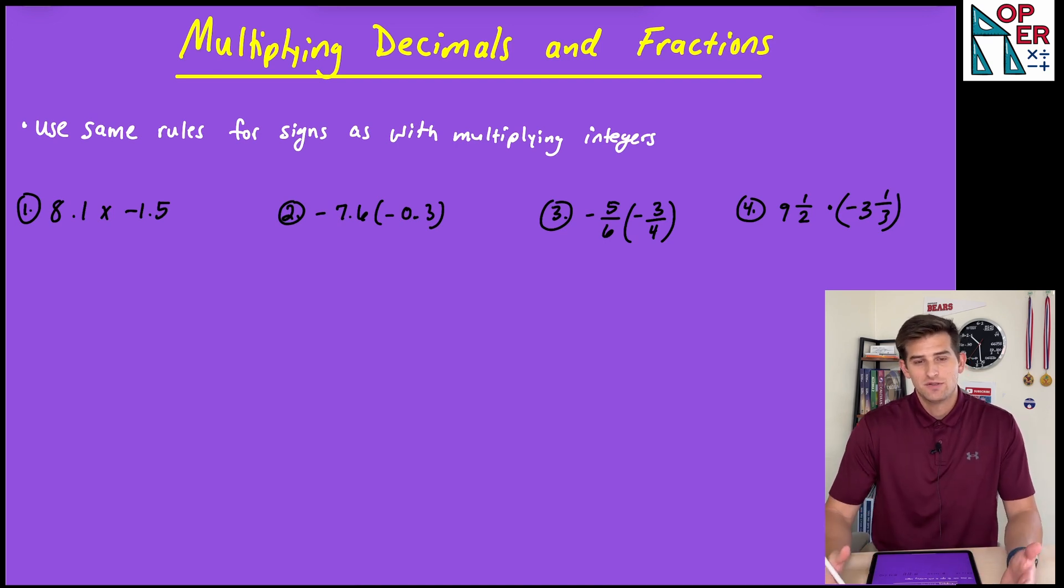So the process for multiplying decimals, hopefully you've learned in a previous course, we're going to multiply vertically as if just multiplying two two-digit numbers. And then once we get our multiplication answer, then however many decimal places we had in our initial problem, that's how many decimal places we're going to have in our answer. And I'll show you that for number one, number two.